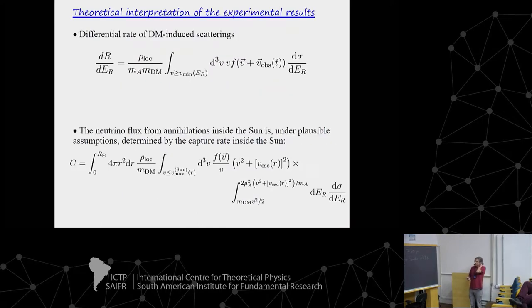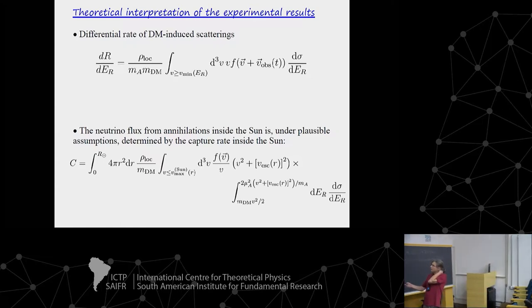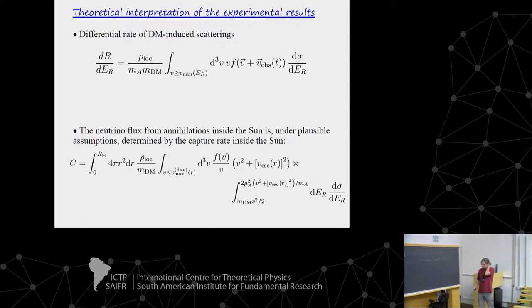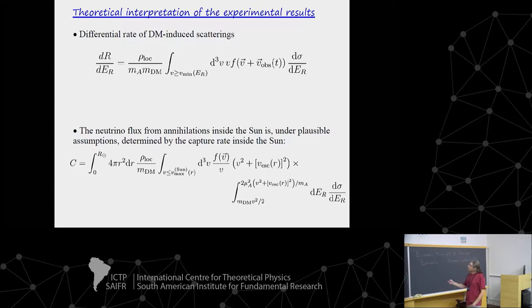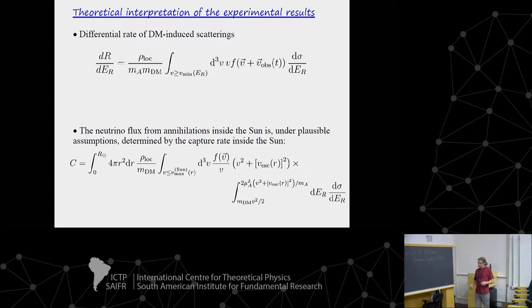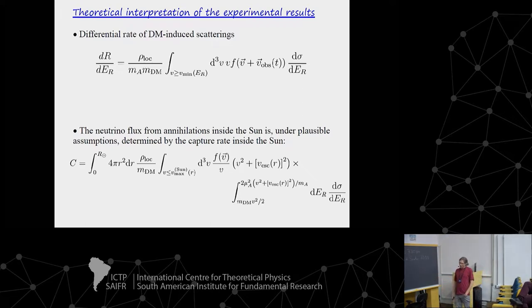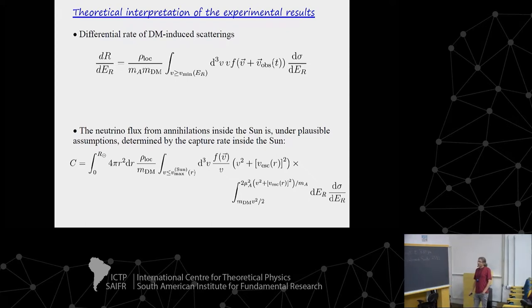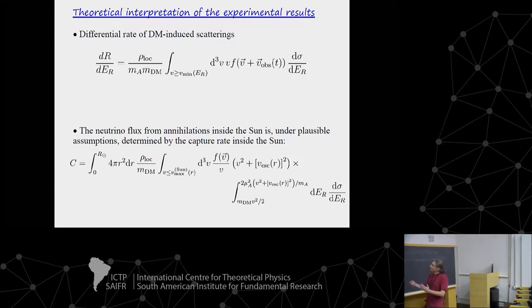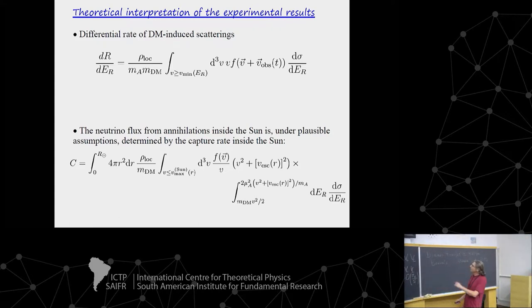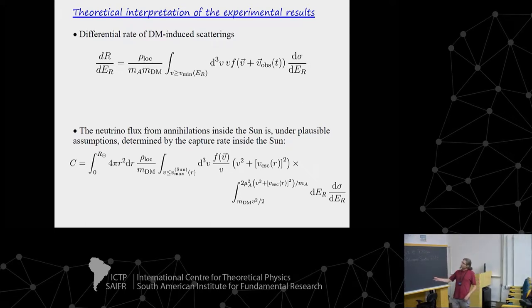The master formula for this purpose gives the rate of nuclear recoils as a function of recoil energy. It is proportional to the density of dark matter projectiles divided by the dark matter mass, the differential cross-section, the relative velocity of dark matter particles with respect to the target, and weighted by the velocity distribution of dark matter particles inside the solar system — integrated over velocities that can induce a detectable recoil. The neutrino flux from the sun is correlated with the capture rate under well-motivated assumptions.